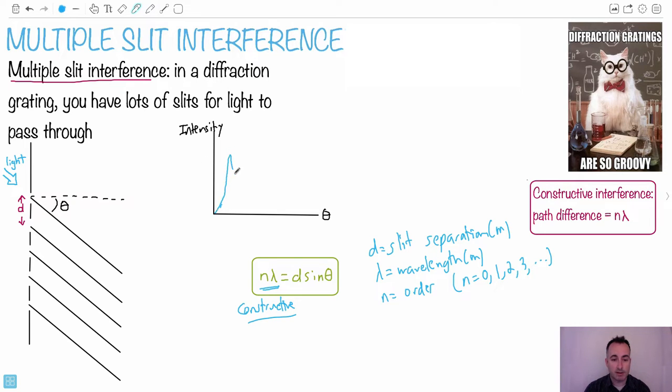So this tells you basically where your peaks will be. And if you actually want to draw the peaks themselves, your intensity, it'll go like this. It'll be sort of these really sharp little peaks like this here. It'll just sort of repeat like this. Now this here will be your peaks.